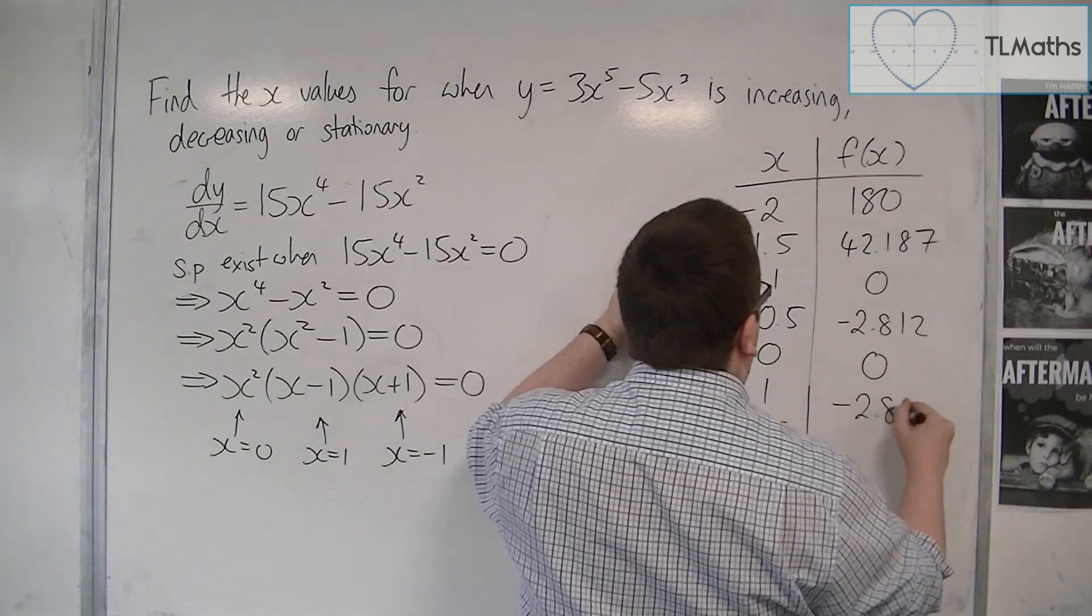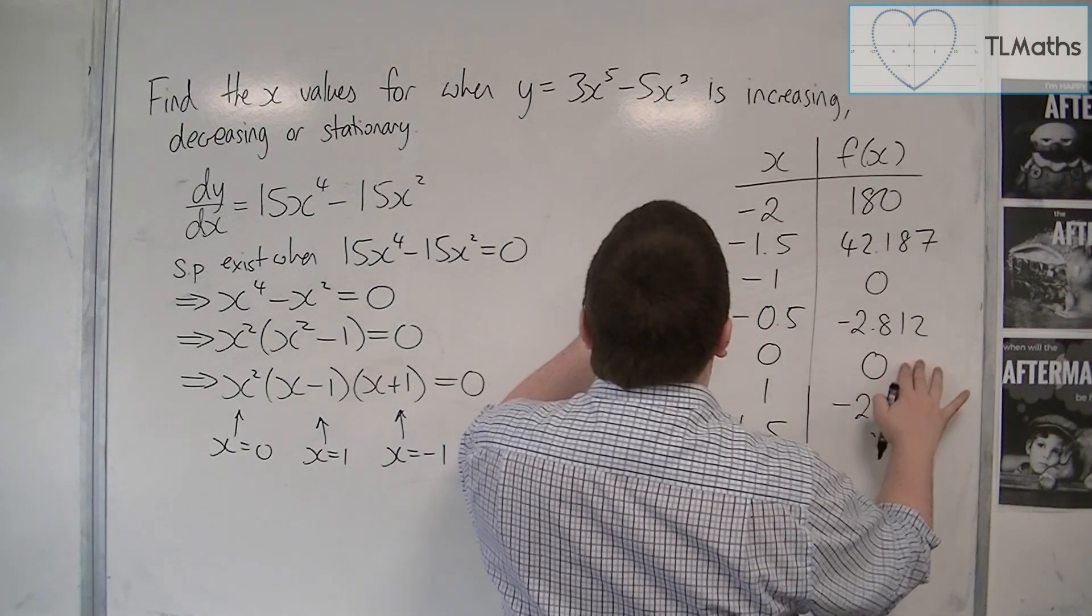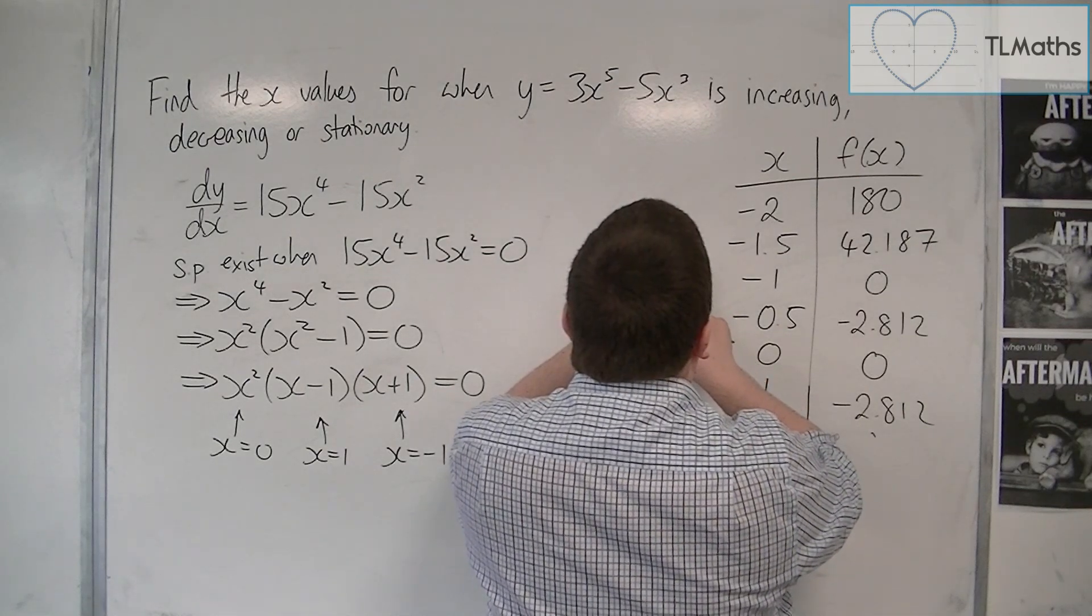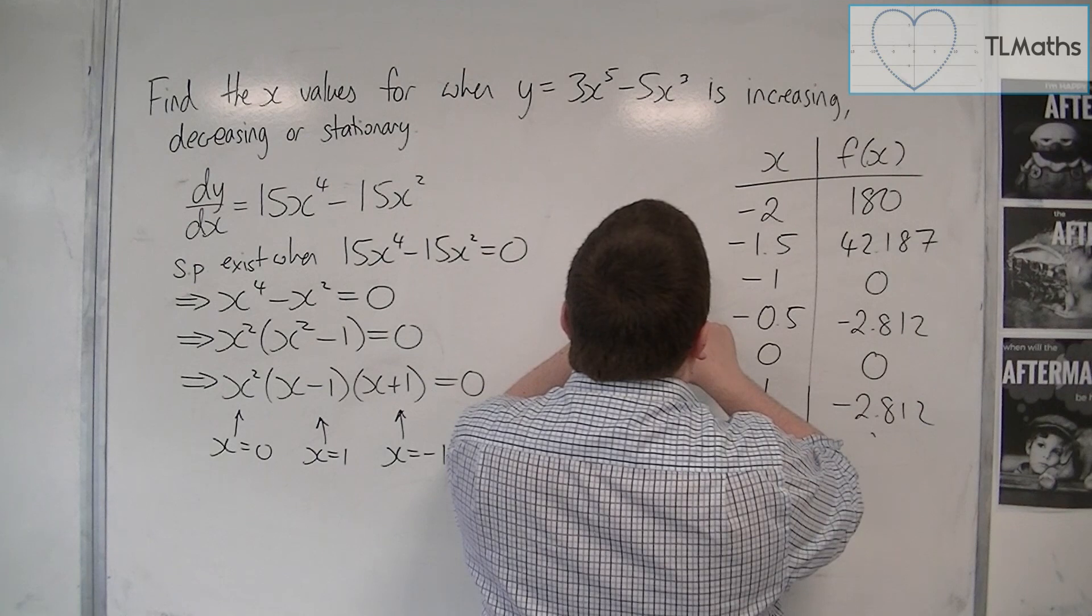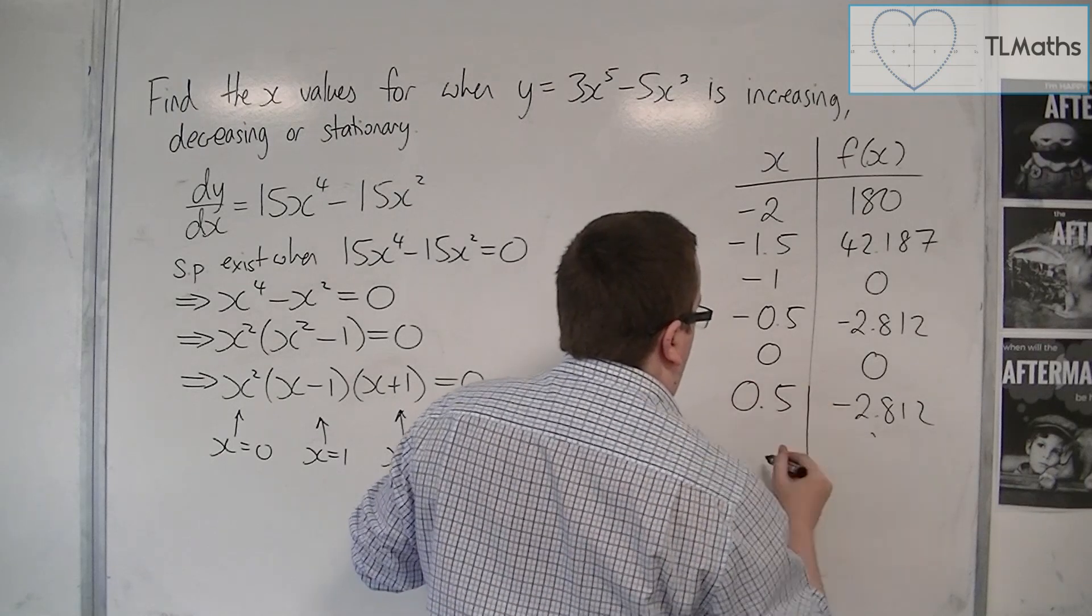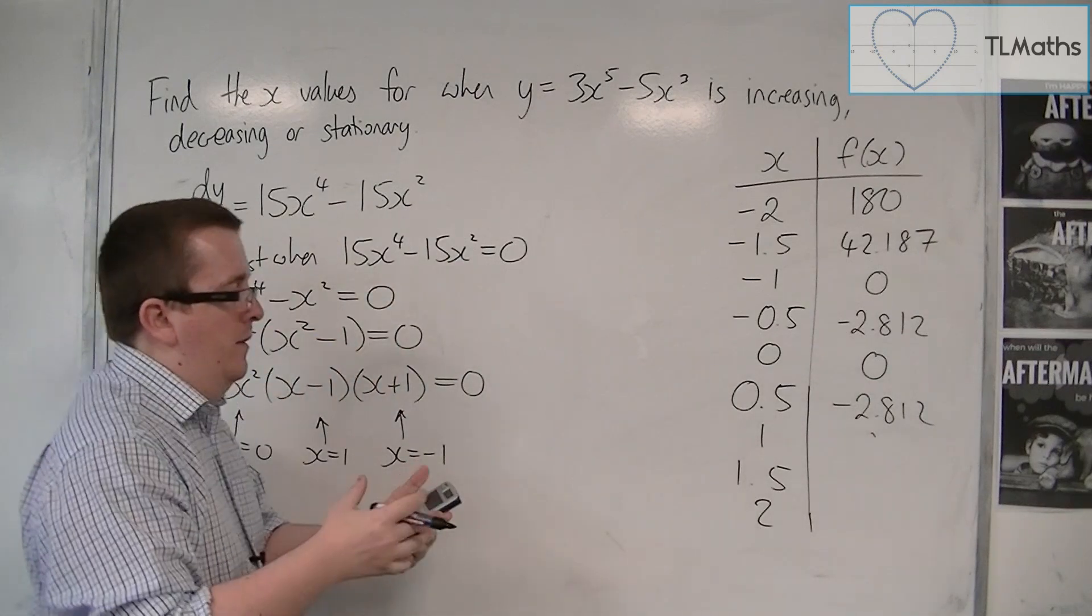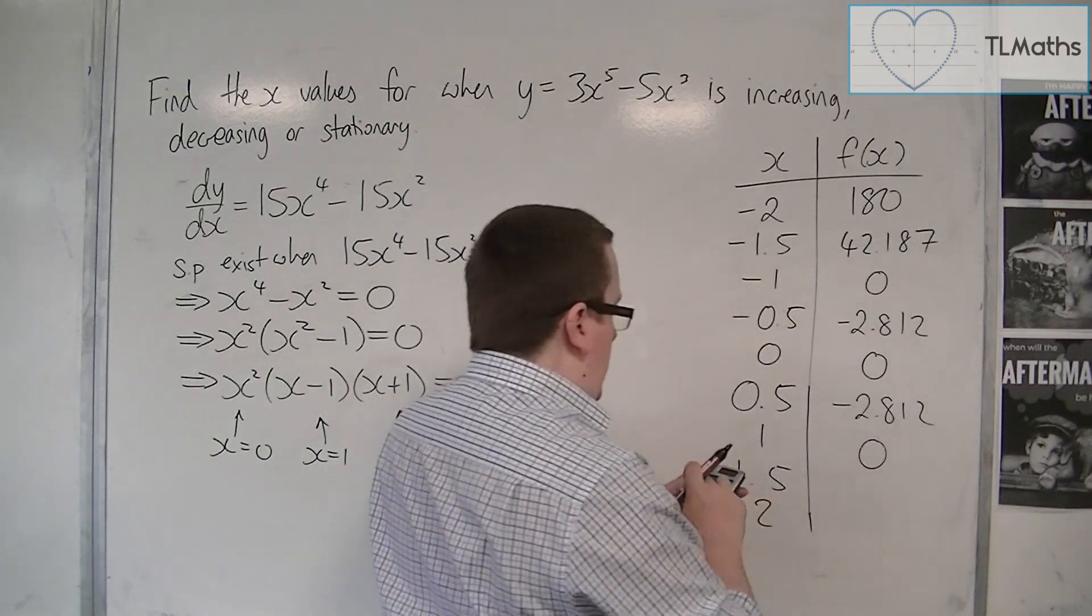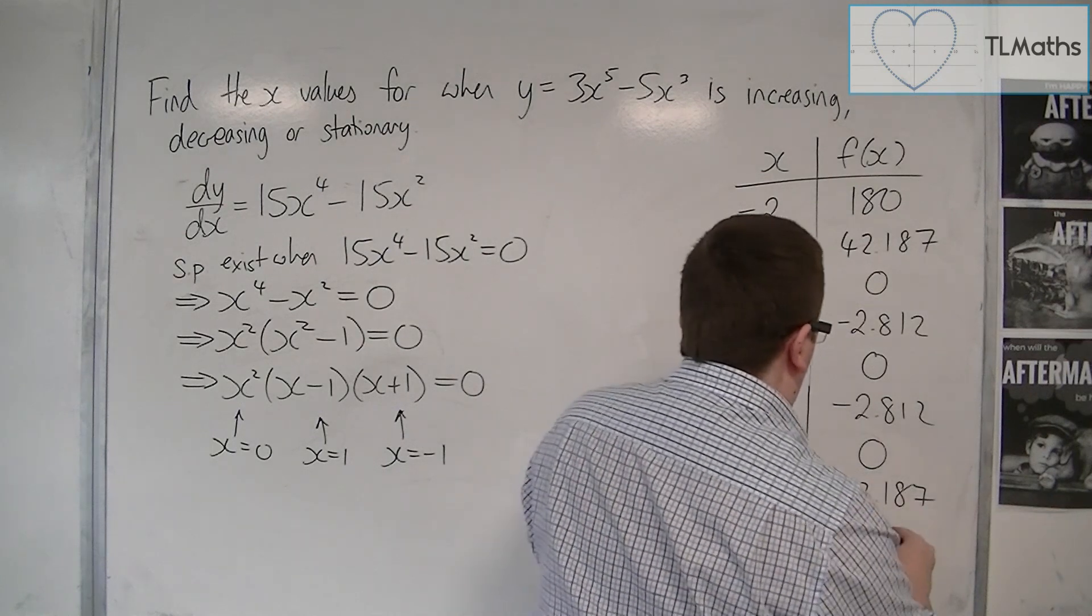Then we've got minus 2.812 again. Then we've got 0. I've scrolled down too far. So the x values, minus 1 was 0, minus 0.5 was that, 0 was that, that's fine. And 0.5, I've missed out 0.5 in my table, that's why. Can't add up the 0.5s clearly. And then x is 1, we've got 0 again, and then we've got 42.187, and then we've got the 180. So this table is what I've got in the calculator.